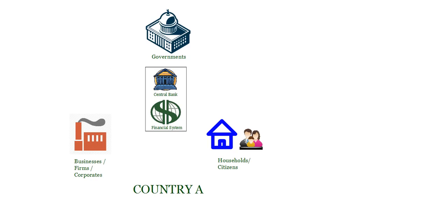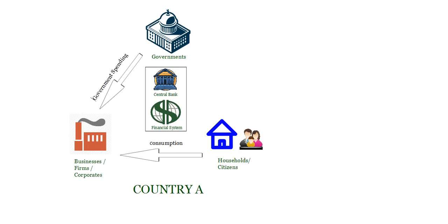Now that we have established the players, we need to understand the relationship between them. It should be easy to understand that the businesses, firms and corporates — or any individual producing something of economic value — are the group which produces in an economy; they are the producers. Whatever they produce is consumed by the people living in the country, the households and citizens, and by the governments. The households and citizens consume what is produced by the businesses. So do the governments — for example, like building roads, the government looks for a contractor and pays them to build roads, create buildings, and so on.